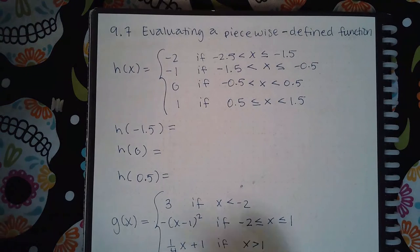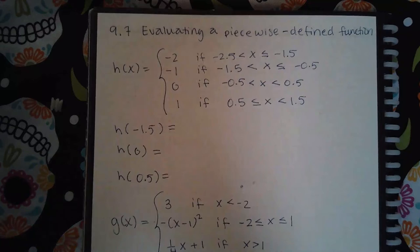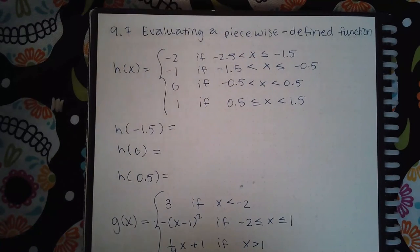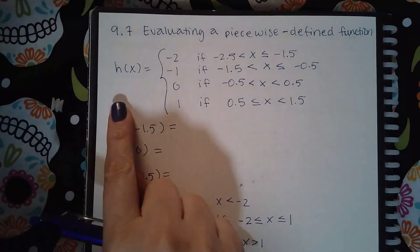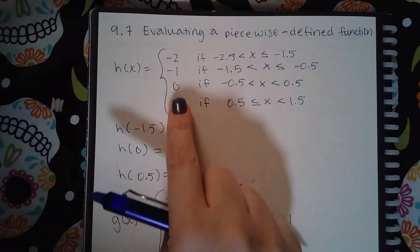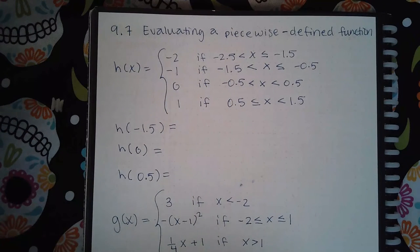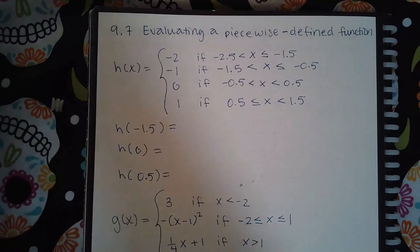So here we have 9.7 evaluating a piecewise defined function. We have a function h and we have the y values for each of that function, but that y value depends on the x value. So if the x value is between negative 2.5 and 1.5 or equal to negative 1.5, then this is the y value I would use.